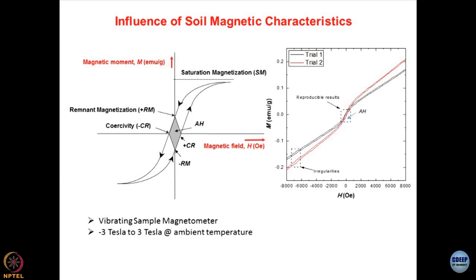Starting from point zero, as more and more magnetic field is applied — where Oersteds corresponds to the field unit and EMU per gram is the magnetic moment unit — as you increase the magnetic field, the material gets magnetized and this magnetization is computed in the form of magnetic moment. There is an increase in magnetic moment until it becomes constant. This point is known as saturation magnetization (SM), which is the maximum capacity of the soil mass up to which it can be magnetized.